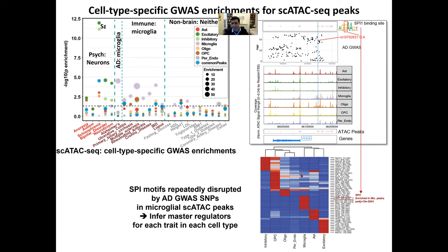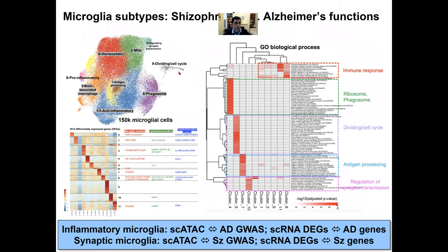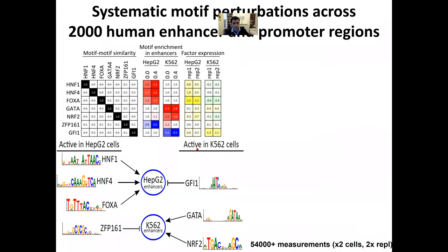We can also start subdividing these microglial cells and capturing more than 10 different subtypes. In particular, synaptic microglia versus inflammatory microglia — inflammatory microglia show accessibility specifically for Alzheimer's disease, but not for schizophrenia. Conversely, synaptic microglia show accessibility for schizophrenia GWAS, but not for Alzheimer's. Similarly, the differentially expressed genes in those cells are Alzheimer's and schizophrenia specific.